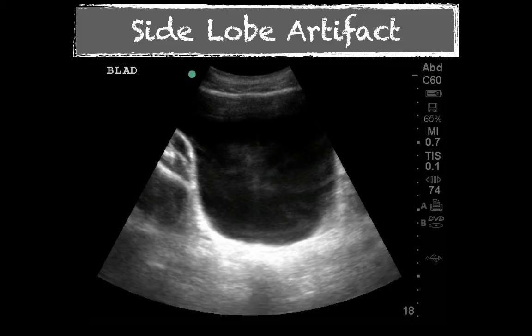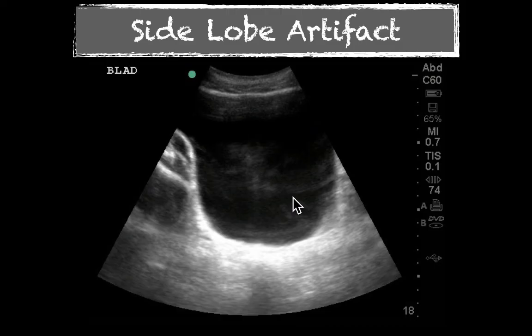Side lobe artifact — some of this has to do with the fact that this image has over-gain. This is the same image we had for posterior enhancement, but for various reasons we're getting some of these arced waves, or sound wave images. That side lobe artifact does not represent true structures, but you can get those around calcified areas. You'll see that sometimes on your heart, and you can see it on your bladder when there are strong interfaces between the bladder fluid and the underlying anatomy.